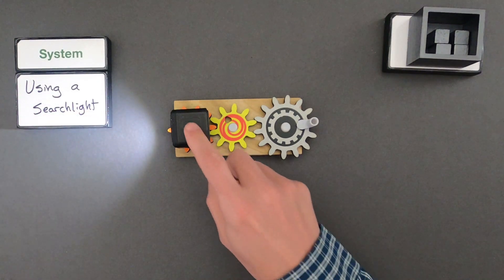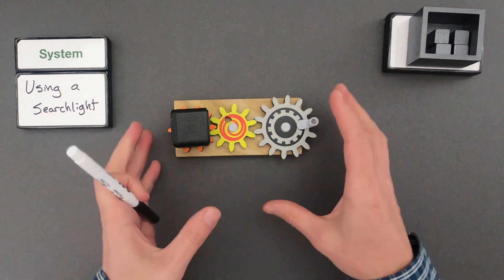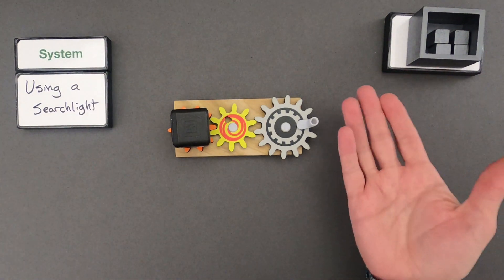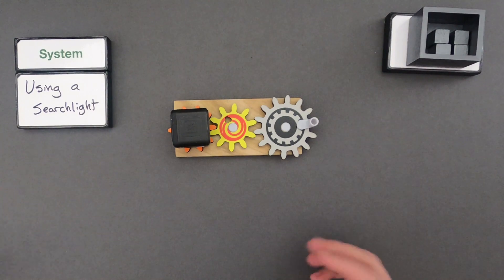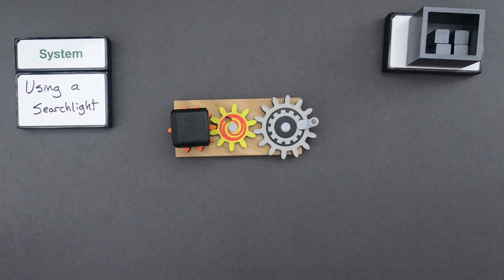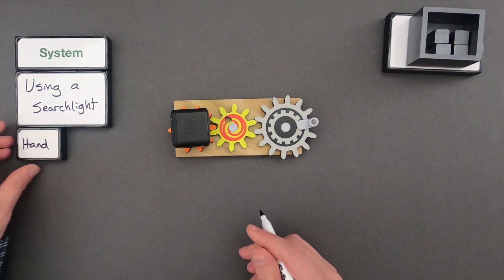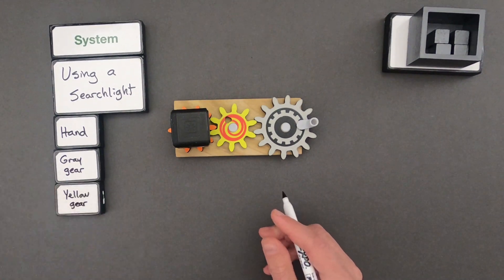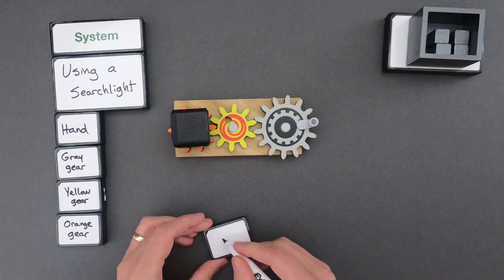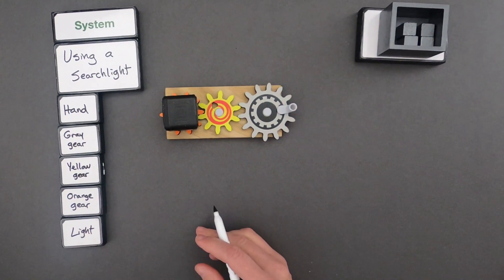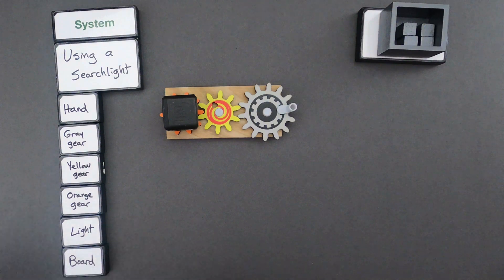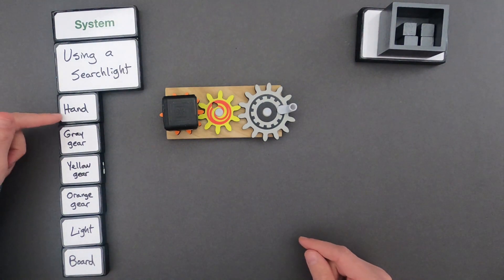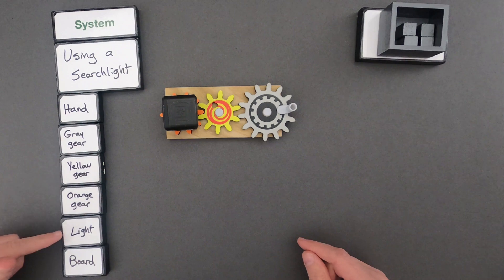So let me define the system. I define the system as using a searchlight, so we're not going to just deal with the searchlight itself, but we're going to deal with my hand, because my hand is going to be using the searchlight. The next thing I should do is figure out what are all the components within the system. So I see quite a few components.